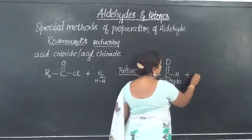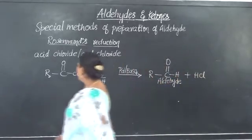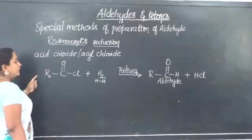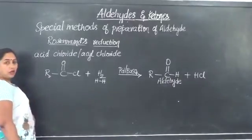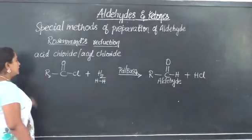So along with aldehyde, we also obtain HCl. Now, let us take up the example of a compound for acid chloride.